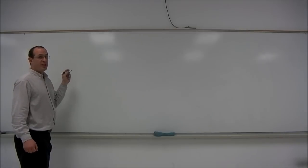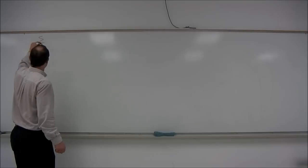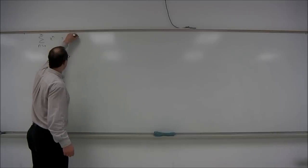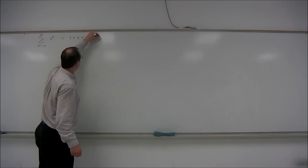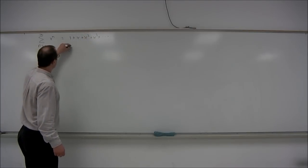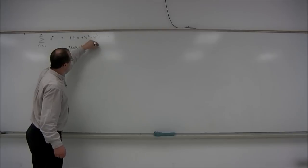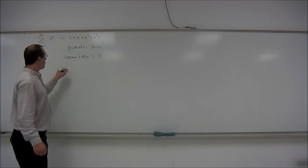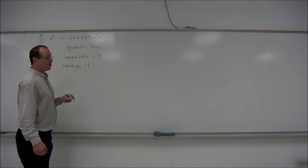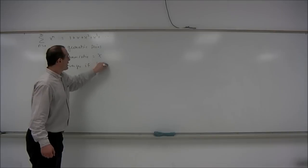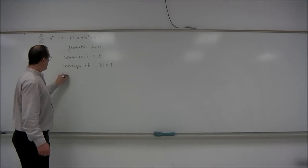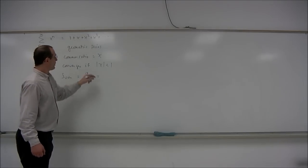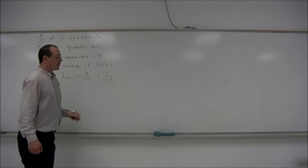We'll begin with the example of a geometric series: the summation n equals 0 to infinity of x to the n. This equals 1 plus x plus x squared plus x cubed, and so on. This is a geometric series. The common ratio is equal to x, so the series will converge when the absolute value of the common ratio is less than 1 — that is, when the absolute value of x is less than 1. Moreover, the sum equals the first term divided by 1 minus the common ratio. Here the first term is 1, so the sum is 1 over 1 minus x.